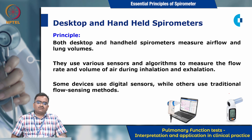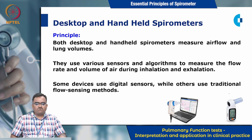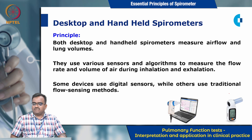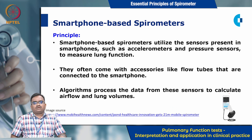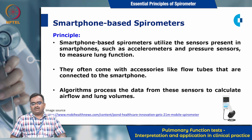The commonly used spirometers are desktop and handheld spirometers and smartphone-based spirometers. Both desktop and handheld spirometers measure airflow and lung volumes, using various sensors and algorithms to measure the rate and volume of air during inhalation and exhalation. Smartphone-based spirometers utilize sensors present in smartphones such as accelerometers and pressure sensors to measure lung function, often with accessories like flow tubes connected to the smartphone. Algorithms process the data from these sensors to calculate airflow and lung volumes.